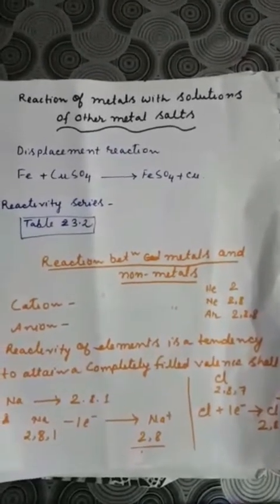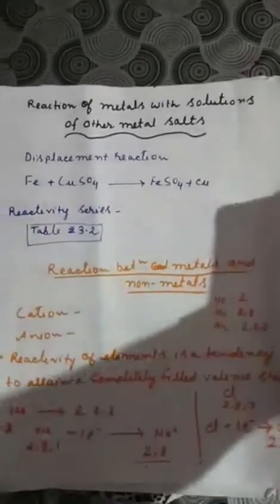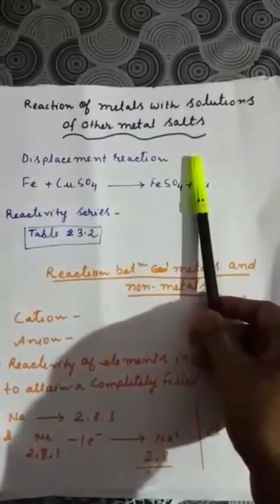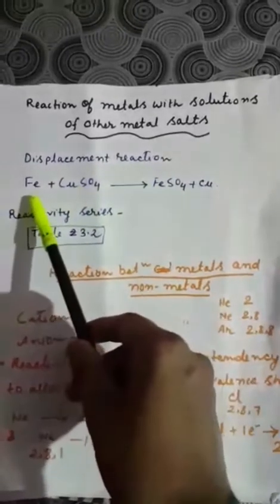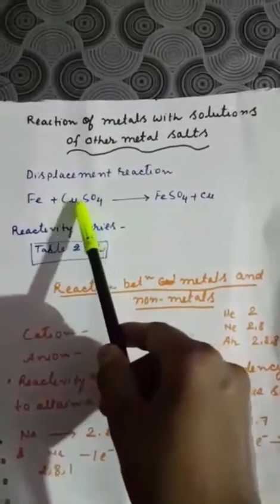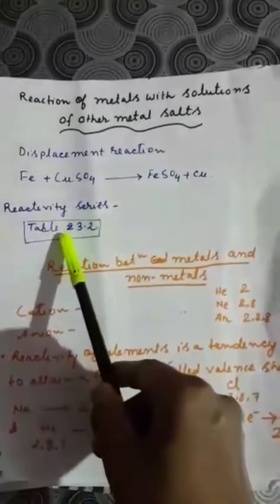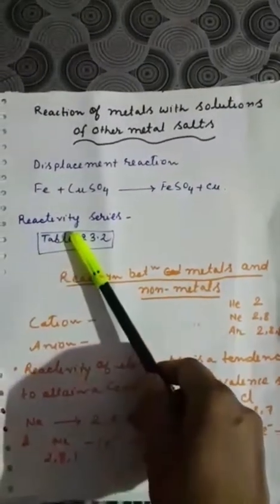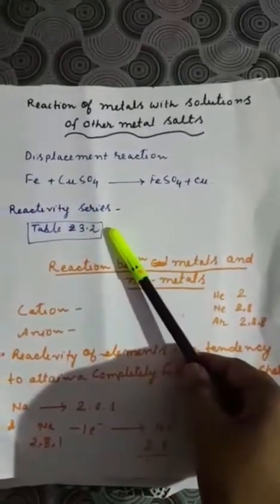Hello everyone. Today let us continue with the topic chemical reactions of metals. Next is reaction of metals with solutions of other metals. This one in chapter 1 you have already learned — that is displacement reaction. If a metal is more reactive than the metal present in the salt solution, this metal will displace the metal present in the salt. Remember the reactivity series.